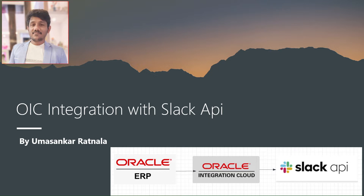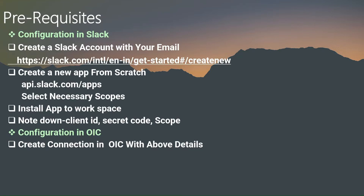In order to build this integration, we can use OIC integration. We can receive the messages from Oracle ERP Cloud, and by calling the Slack API we can send messages accordingly. That means we are sending the complete outbound information from Oracle ERP Cloud to the Slack API.